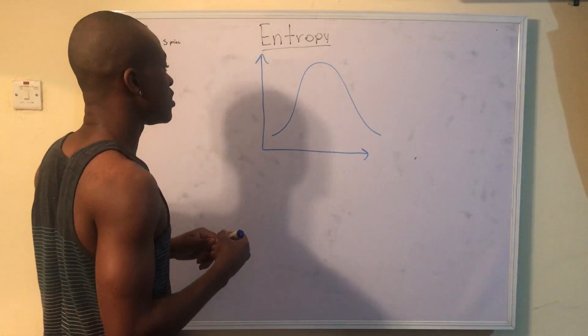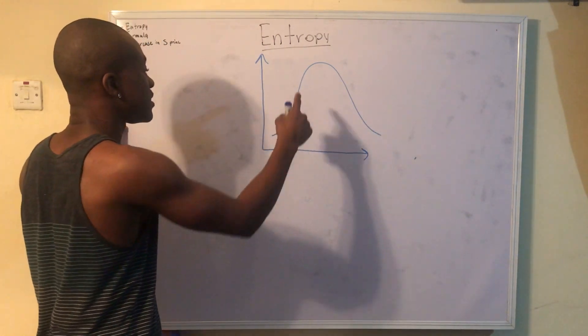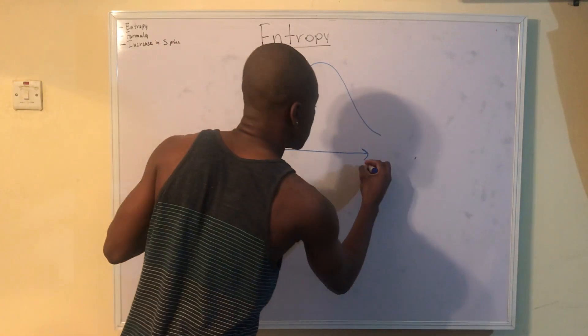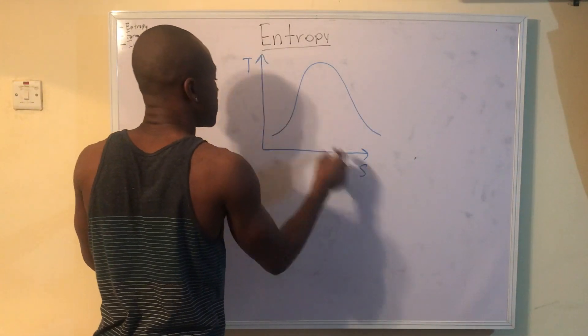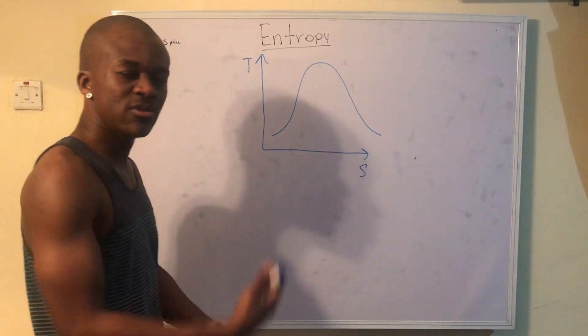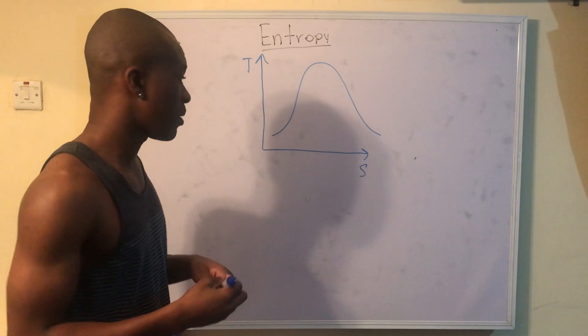And we can basically do the same thing that we did before. This is our SF, SG, sorry, this is T, this is S, this is T, okay? So we end up getting this, right? Sort of the same dome that we're used to seeing on a PV diagram.